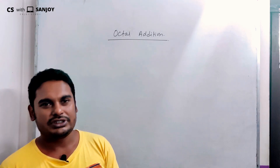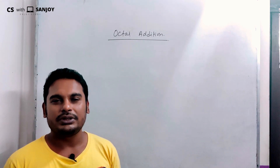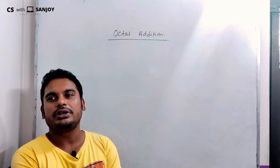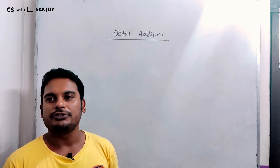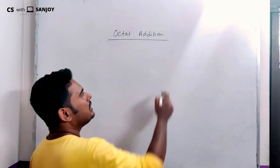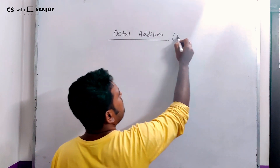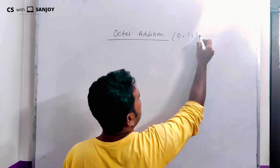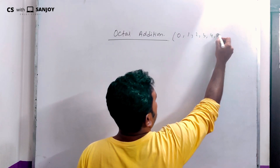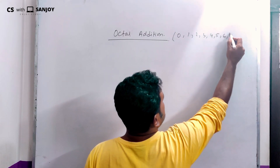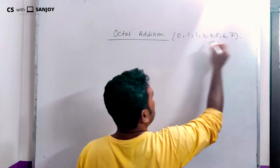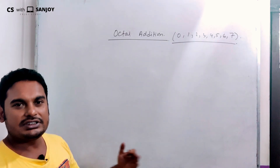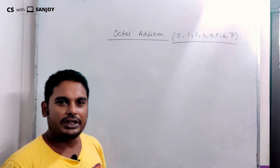Today, we will learn about the octal number system. First of all, in the octal number system, the symbols are 0, 1, 2, 3, 4, 5, 6, and 7. This is a distinct set of symbols. Anything beyond 7 is not a valid octal digit.